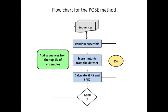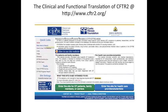To develop our CFTR POSEs, we needed a training set of known CFTR-causing mutations and mutations thought to be disease neutral. To get the disease-causing mutations, we went to the CFTR-2 website. And to get the disease neutral mutations, we curated from the literature.